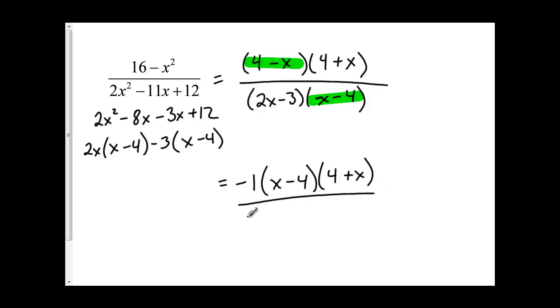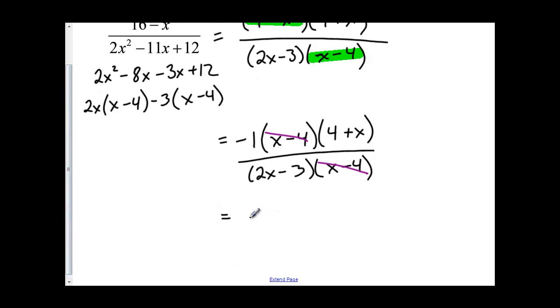My 4 plus x can remain the same. On the bottom, I've got 2x minus 3 and x minus 4. Now by factoring out my negative 1, now I've got two expressions that are exactly the same, so I can cancel them out. But the negative 1 is not going to go away.